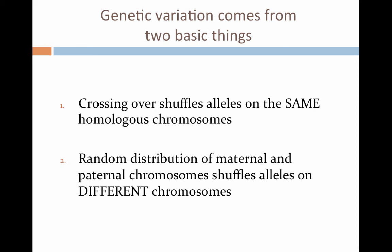The second source of genetic variation is how chromosomes line up on the metaphase plate during metaphase. This is a completely random process, and it creates variation in the new genome because the maternal and paternal chromosomes are randomly distributed. So to recap: crossing over is the first source of genetic variation, occurring on the same chromosomes, and random distribution is the second source, occurring on different chromosomes during the metaphase process.